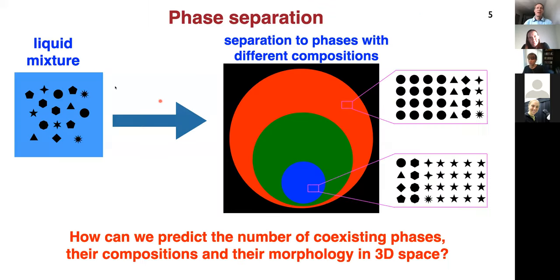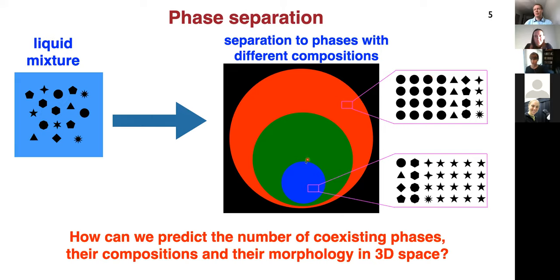I hope that in this one example I showed you that it's important to understand the morphology of these biological condensates, because it's tied to function. This motivated us to study the classical thermodynamic problem of liquid mixtures. Instead of having just two or three components, we consider multiple components, and we would like to know — if I know how these molecules interact with each other and what their concentrations are — into how many phases they will separate, what will be the composition of each phase, and how these phases will arrange in space.